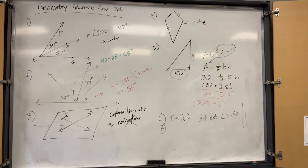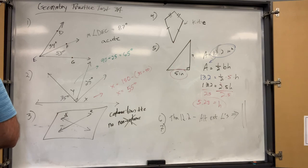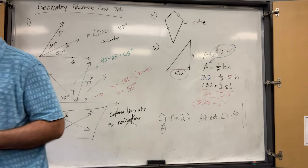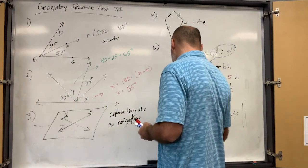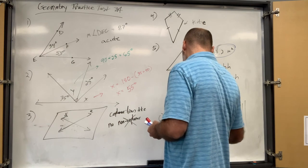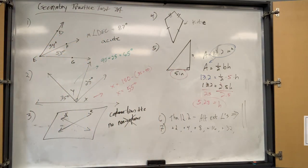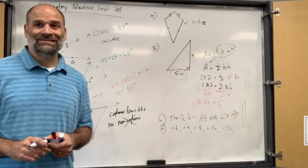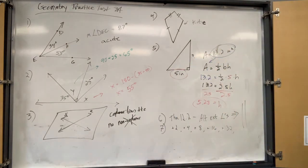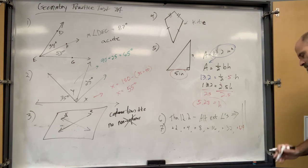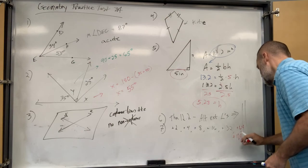Number seven: use inductive reasoning to determine the next term in the series 3, 5, 9, 17, 33, 65. The pattern is you're adding 2, then 4, then 8, then 16, then 32 — doubling each time. So 32 plus 32 is 64, plus 65 is 129.